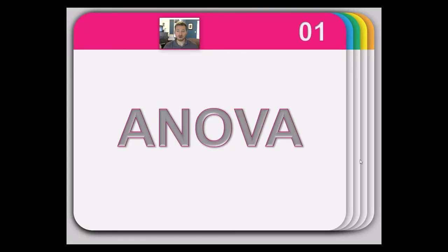All right, class, so here we are back at it. What we're going to do is jump right in talking about analysis of variance. This is abbreviated ANOVA, and it's really just kind of a minor extension of what we've already learned, which is the t-test.